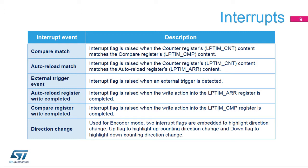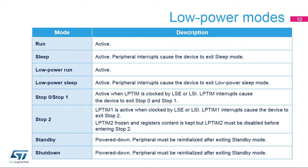The up-and-down direction change interrupts are raised when the encoder mode function is enabled and the counting direction is changed from up to down or vice versa. The counting direction of the low-power timer's counter reflects the rotation direction of the quadrature sensor. The low-power timer peripheral is active in run, sleep, and stop power modes.